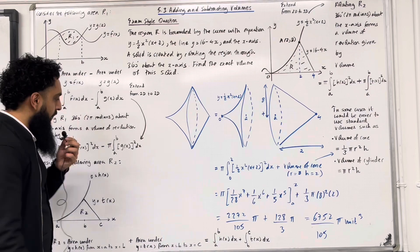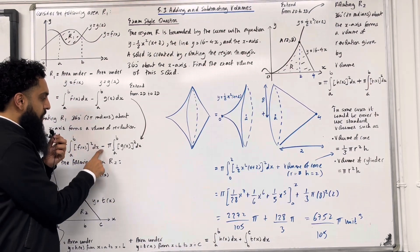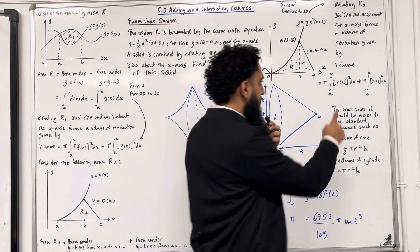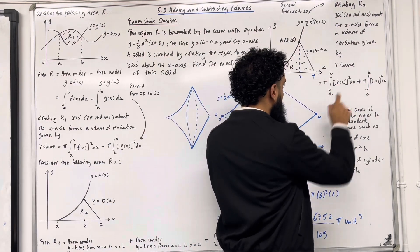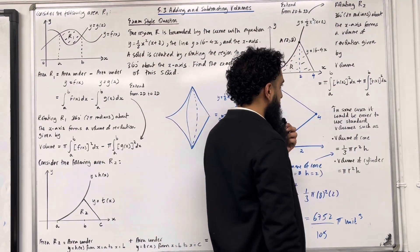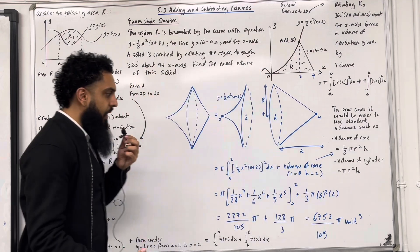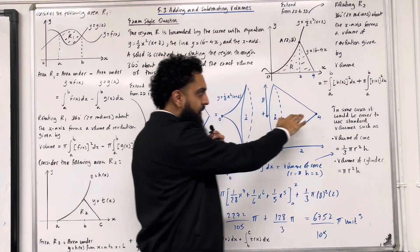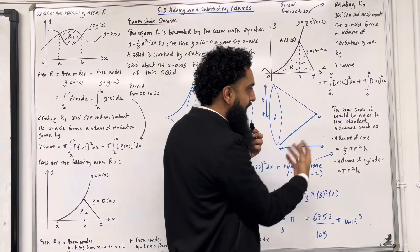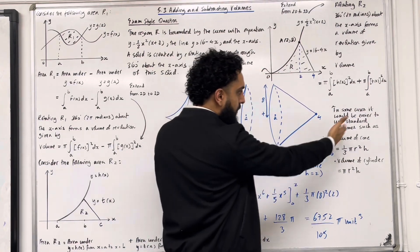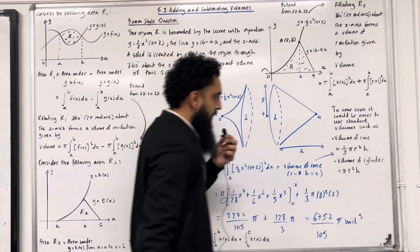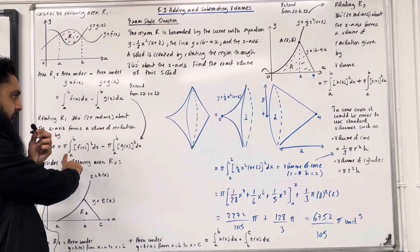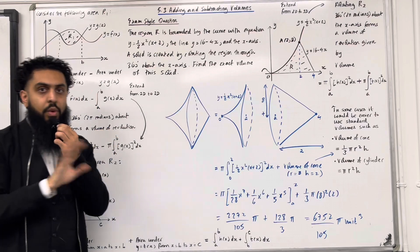Let's do a quick summary. This is the universal method of subtracting two volumes of revolution, and this is the universal method of adding two volumes of revolution. In some cases you can apply the standard volume method — such as volume of a cone or volume of a cylinder — but this method does not apply in all cases. The two universal methods over here can apply in all cases.